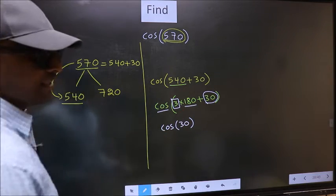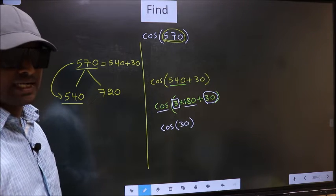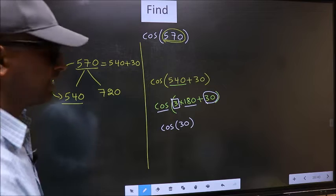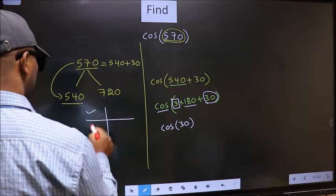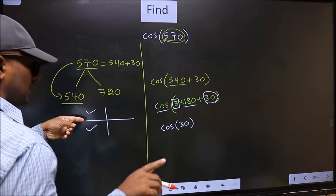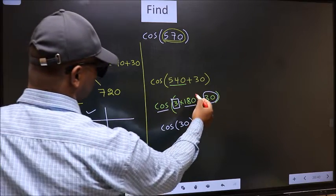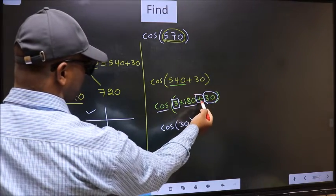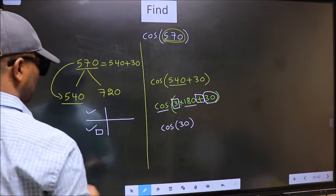And 3 is odd. And all the odd multiples of 180, they lie either in the second or in the third quadrant. So, now to select the quadrant, we should look at this symbol. Here we have plus. That means, the angle lies in the third quadrant.